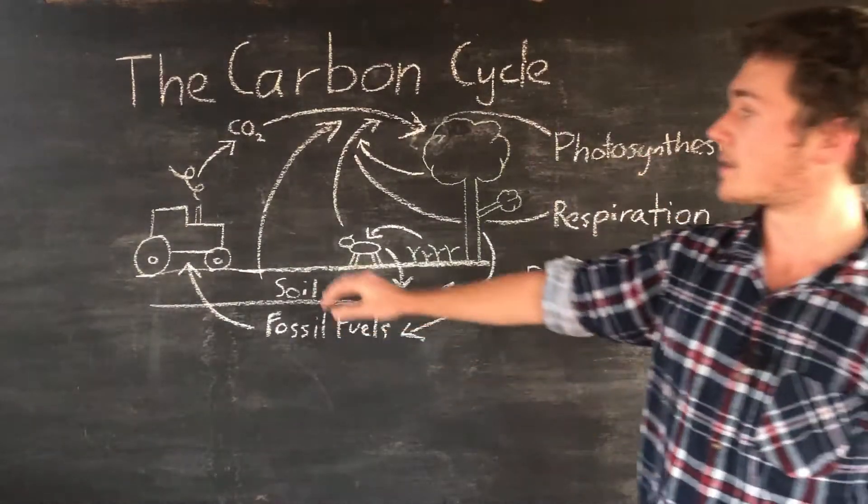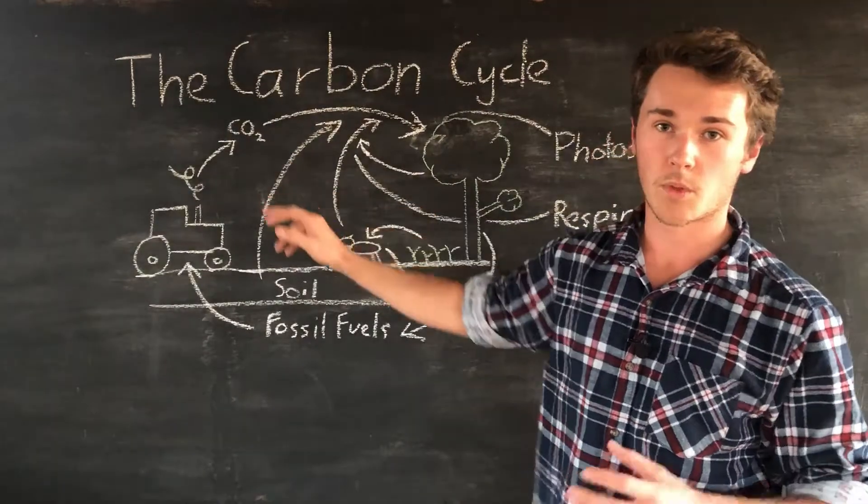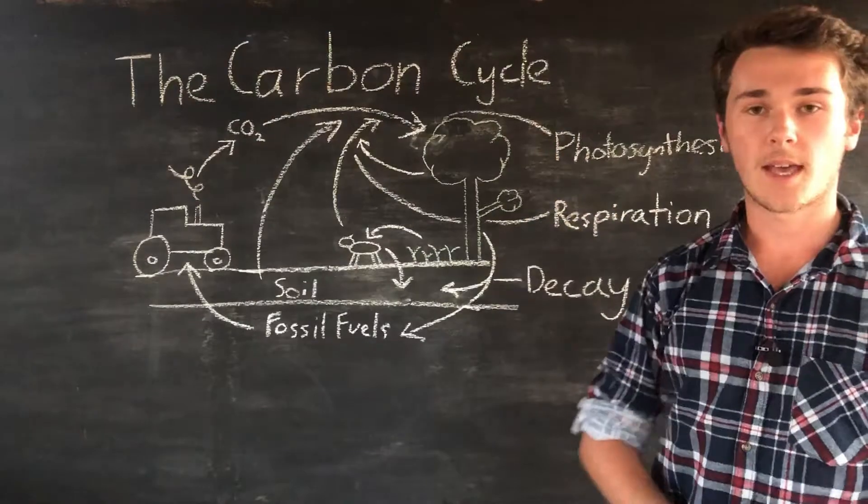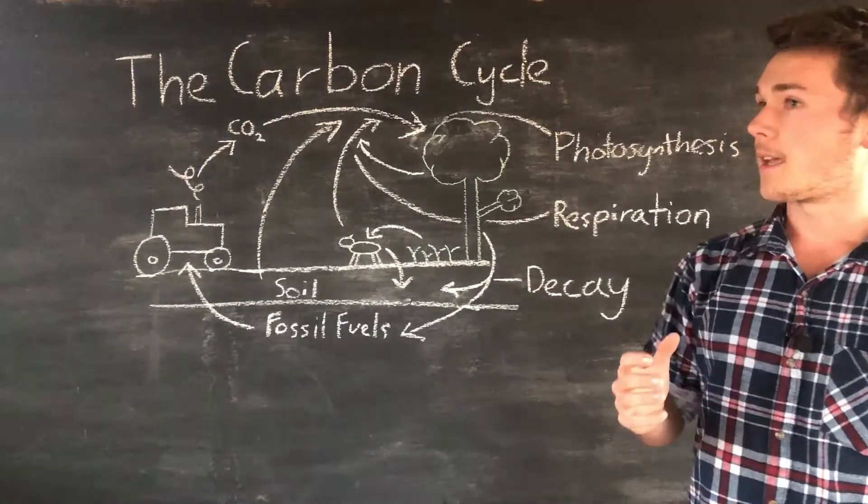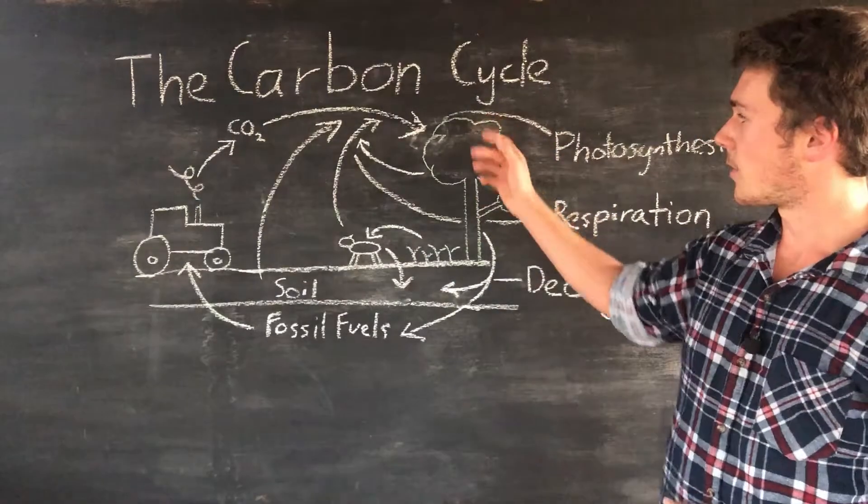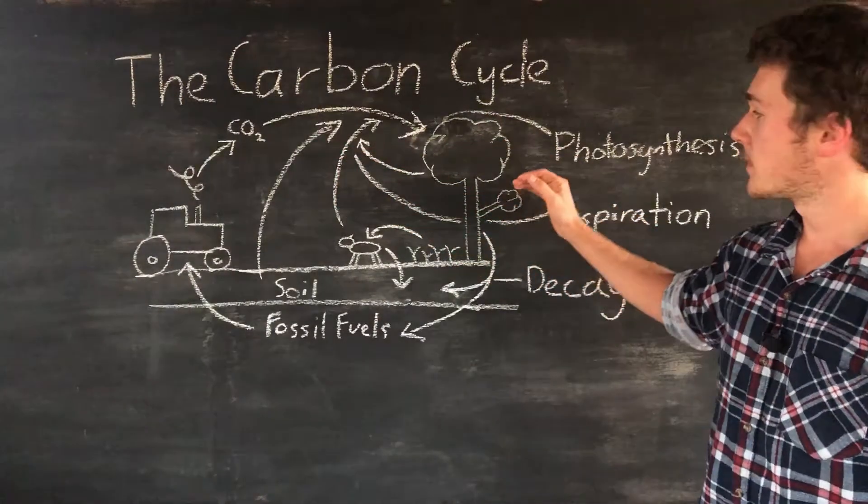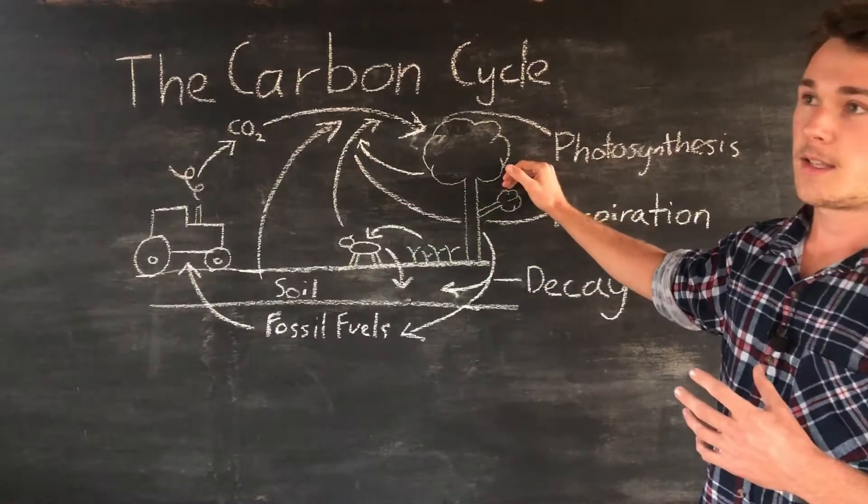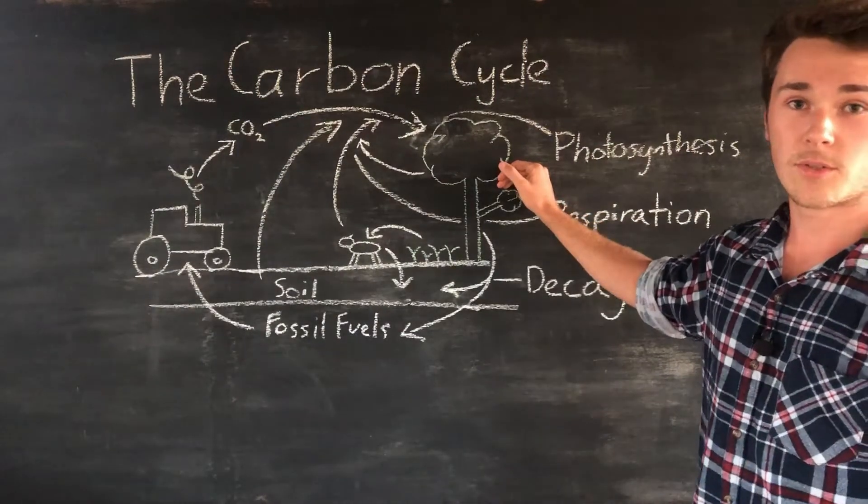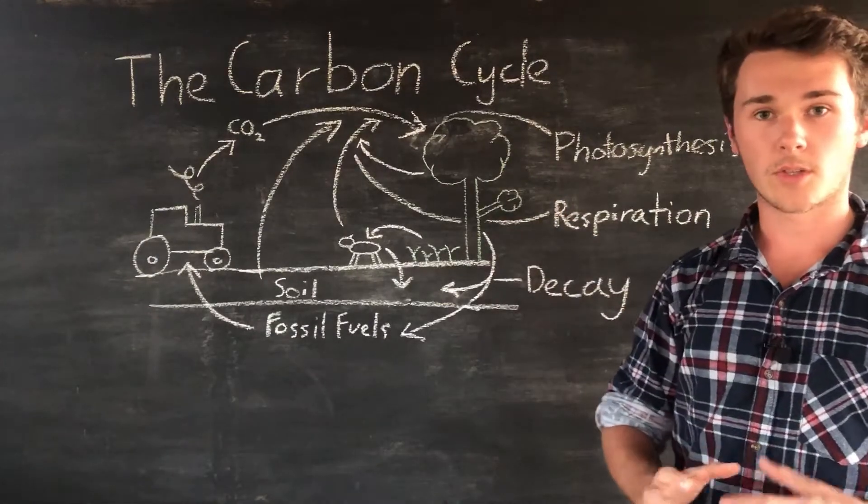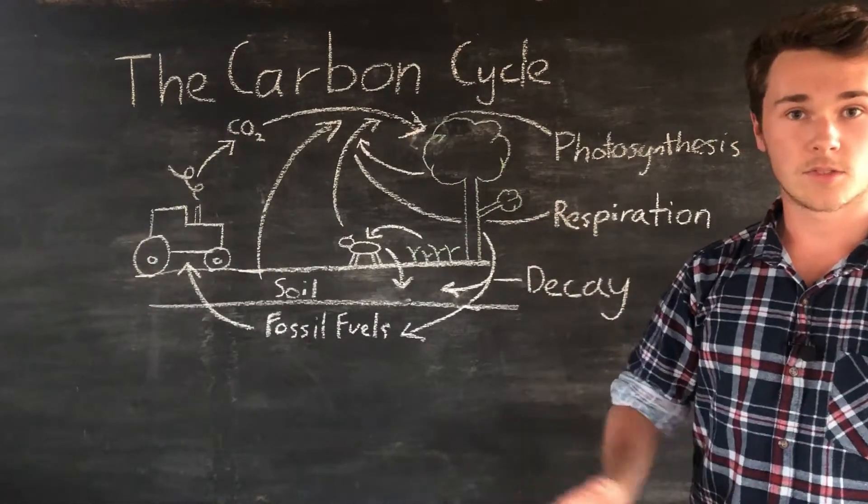Photosynthesis takes up our carbon dioxide with water, uses sunlight to convert that into glucose and oxygen which is then released. Now the carbon is in glucose, a sugar, and this sugar can be turned into starch for storage.